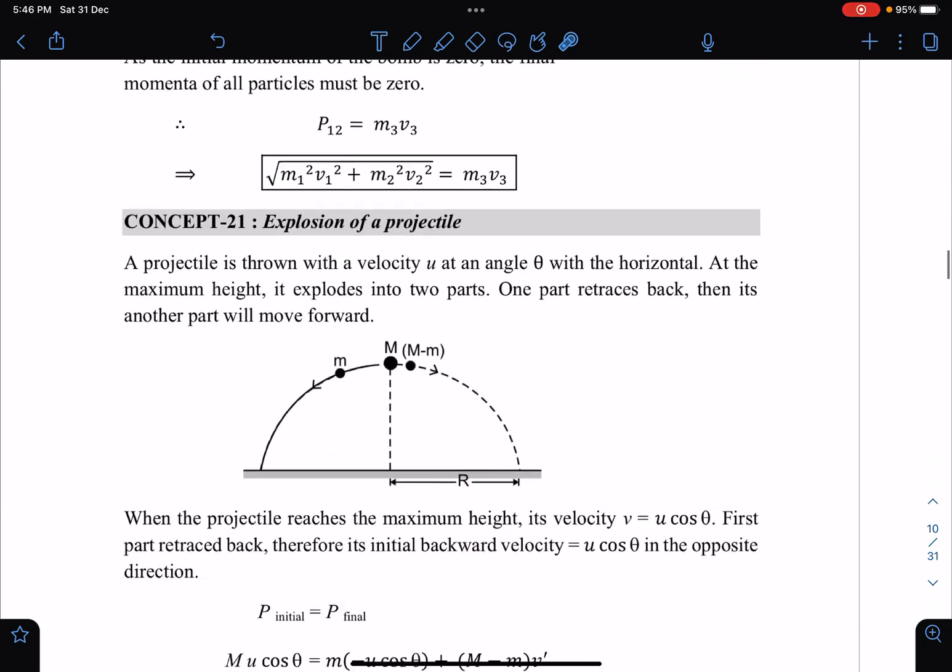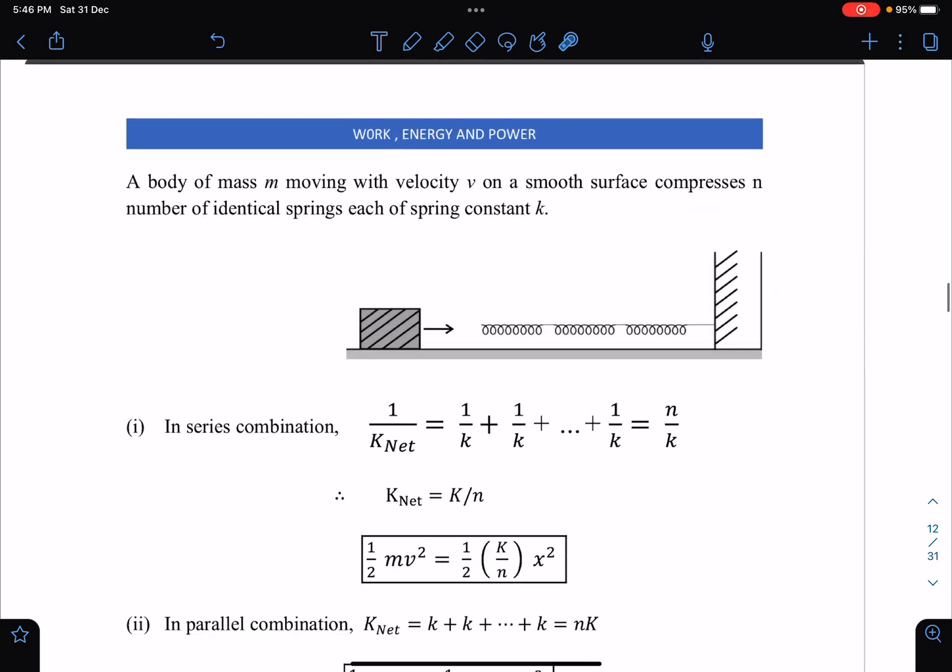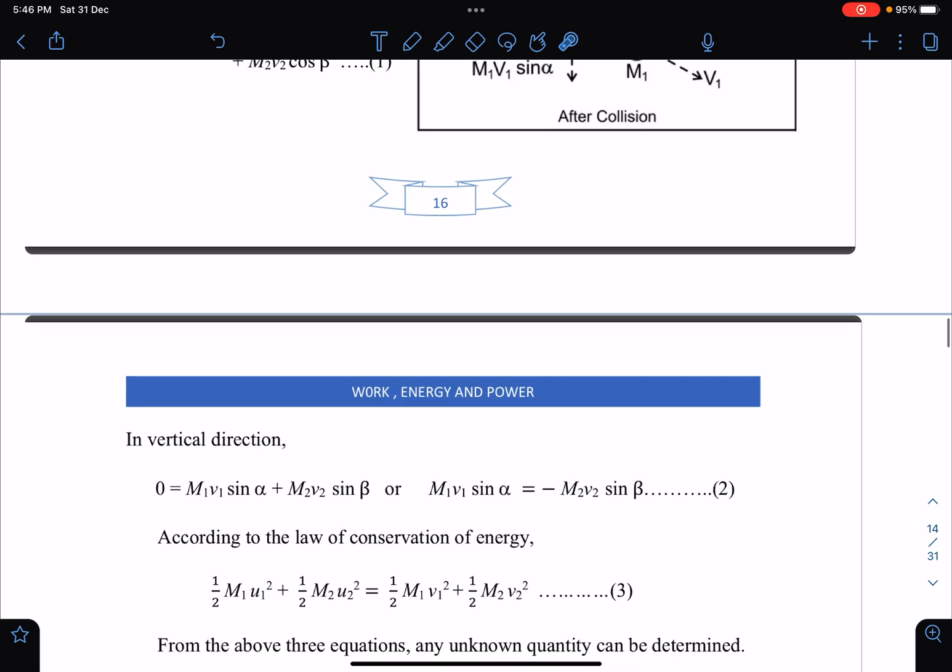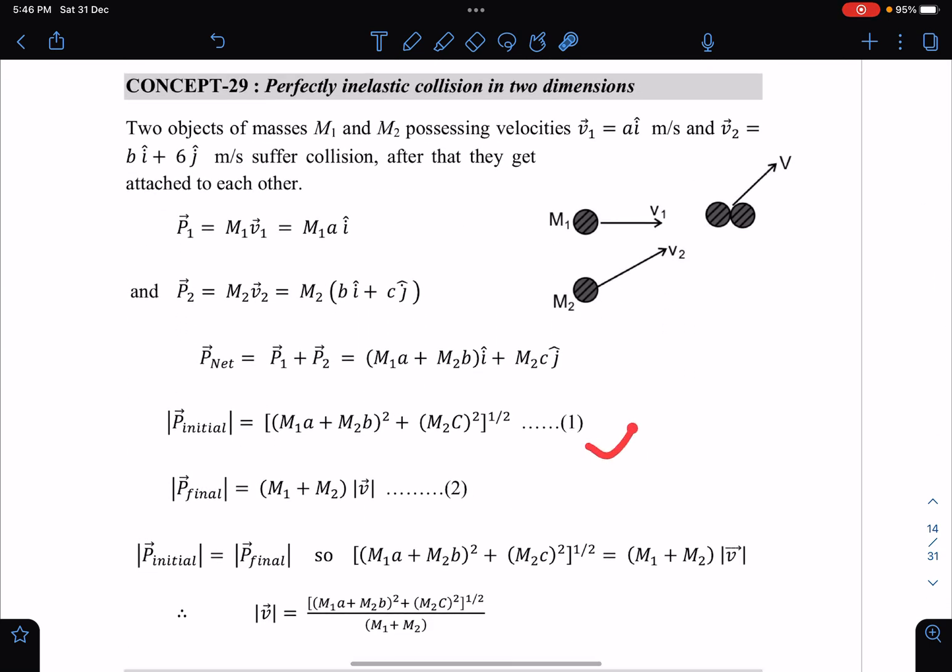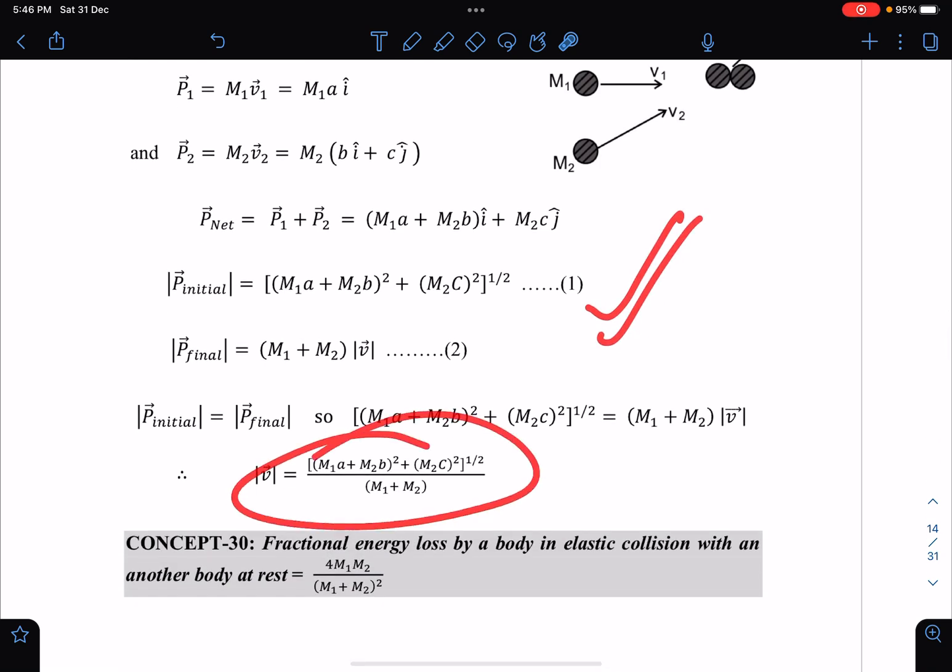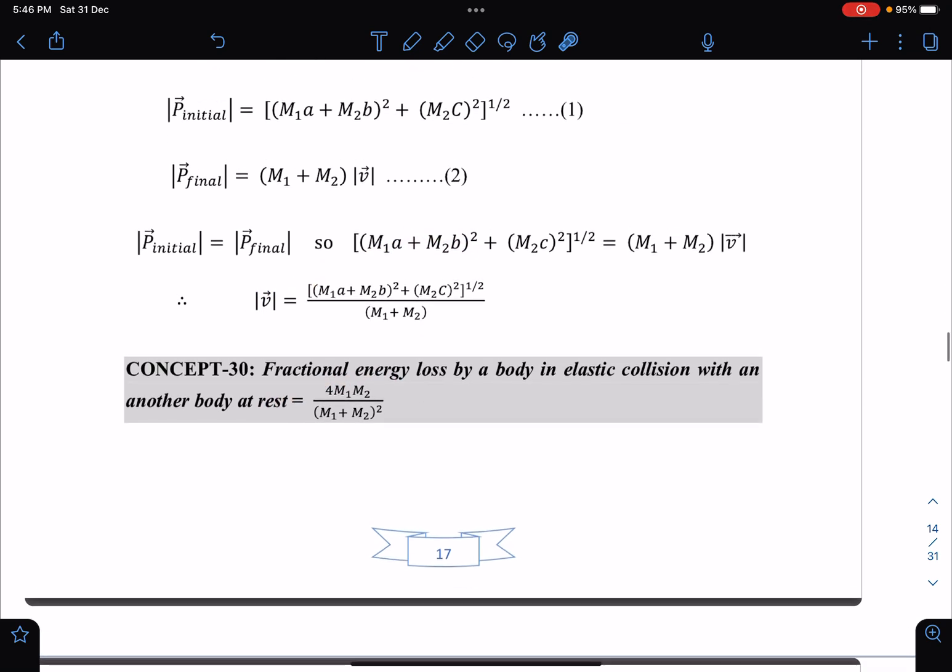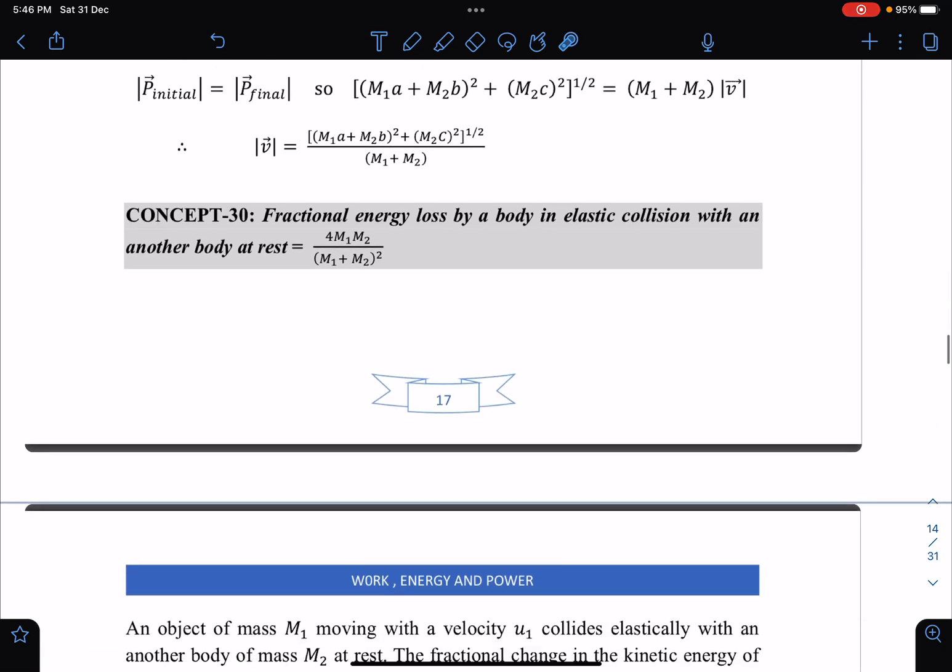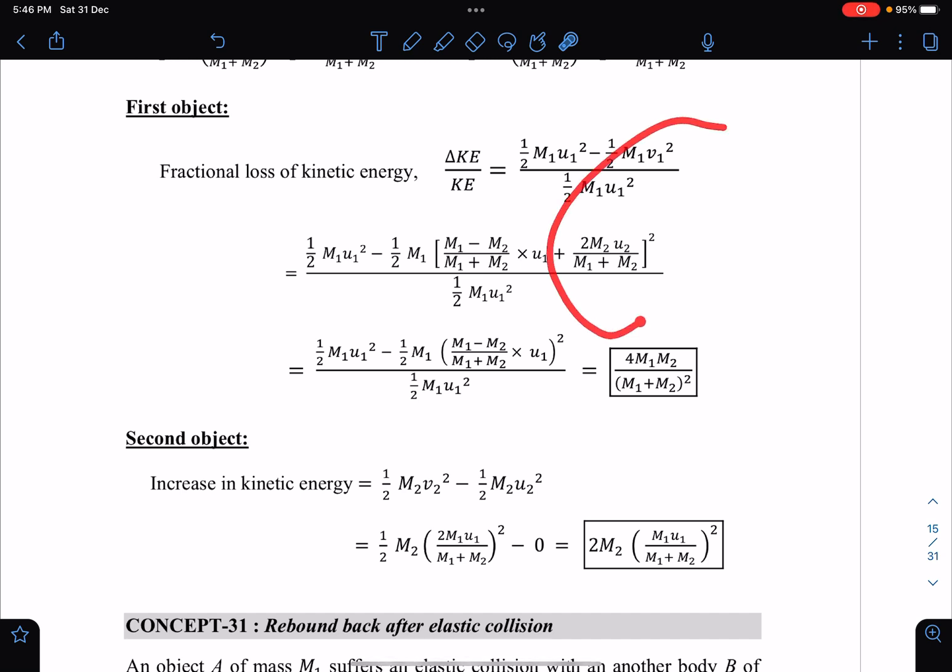Explosion, projectile, some collision questions are also there. I'll show you where important results are there - like this is one good result I suggest you remember. Similarly, fractional energy loss by body in elastic collision - total energy is conserved but individual masses will lose energy. Those ratios, fractional loss of kinetic energy of moving mass and the gain in the second mass.